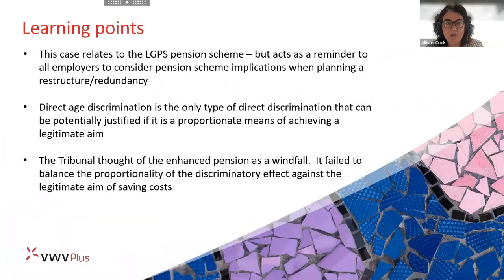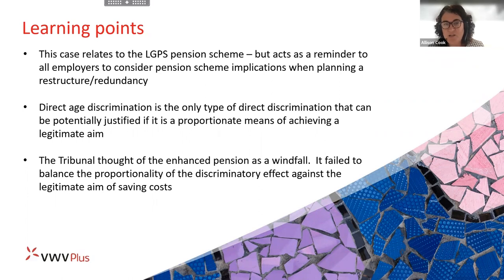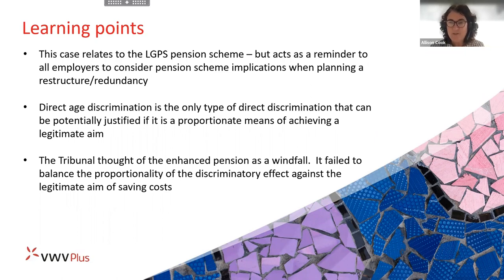Whilst this is a public sector pension scheme, it acts as a reminder to consider what other implications there may be when thinking about restructuring or reorganisation involving redundancy. Direct age discrimination is the only type of discrimination that can potentially be justified — so you need to think about that. In this case, the tribunal thought of the enhanced pension as a windfall but failed to balance the proportionality of the discriminatory effect against the legitimate aim of saving costs. A reminder to plan carefully so that issues don't surprise you partway through the process.